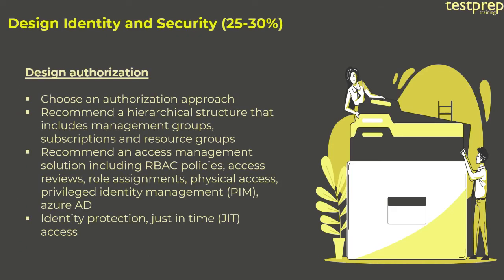Number two: Design Authorization, divided into four parts — choose an authorization approach; recommend a hierarchical structure that includes management groups, subscriptions, and resource groups; recommend an access management solution including RBAC policies, access reviews, role assignments, physical access, privileged identity management, and Azure AD; identity protection and just-in-time access.